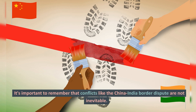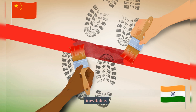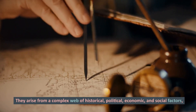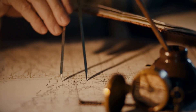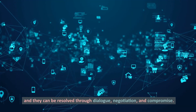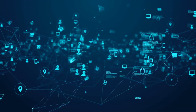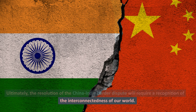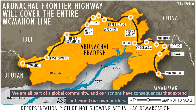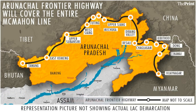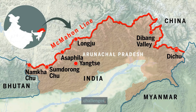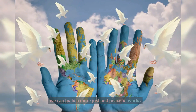It's important to remember that conflicts like the China-India border dispute are not inevitable. They arise from a complex web of historical, political, economic, and social factors, and they can be resolved through dialogue, negotiation, and compromise. Ultimately, the resolution of the China-India border dispute will require a recognition of the interconnectedness of our world. We are all part of a global community, and our actions have consequences that extend far beyond our own borders. By recognizing our shared humanity and working together to address common challenges, we can build a more just and peaceful world.